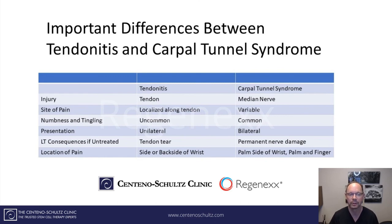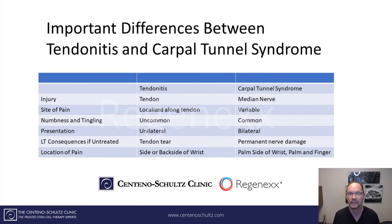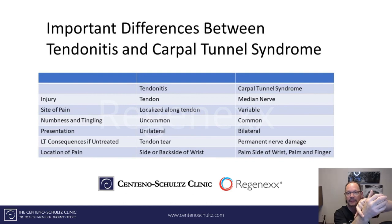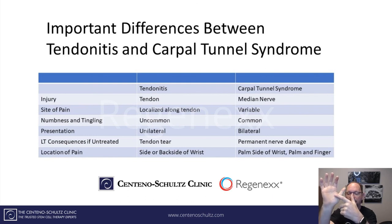What are the long-term consequences if left untreated? With tendinitis, it can progress to a tendon tear. With carpal tunnel syndrome, it's much more severe — you can get permanent nerve injury and wasting, meaning atrophy of some muscles, with considerable disuse of the hand. The location is also quite different: tendinitis is typically on the side or back of the wrist, whereas carpal tunnel is on the palm side involving the thumb, index, and third finger.